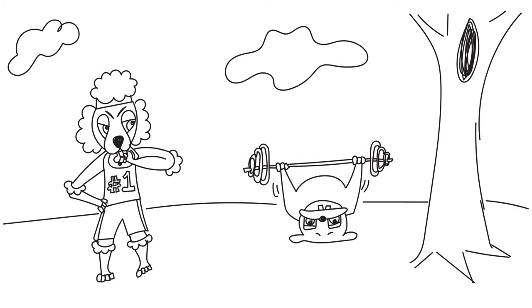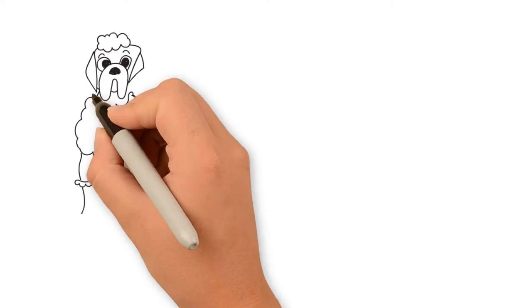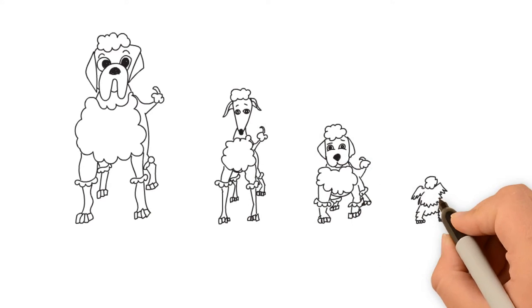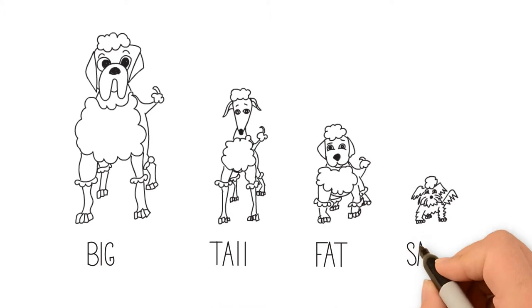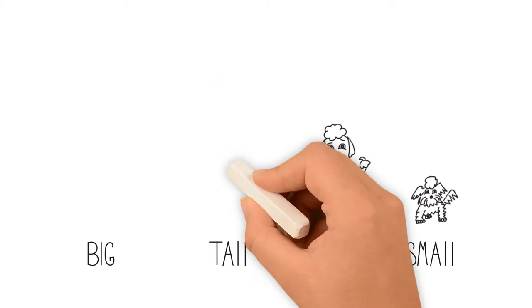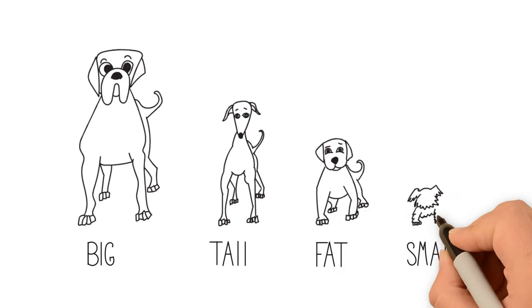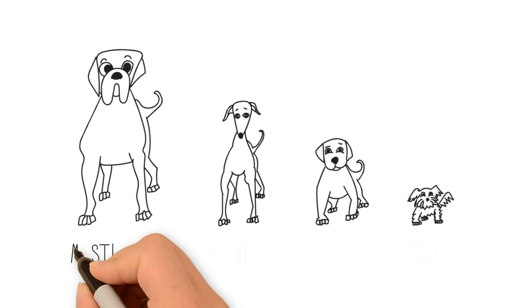But the problem is poodles think that every other kind of dog is just a really big, a really small, or a really fat poodle. When actually the other dogs aren't even poodles at all. They're terriers or mastiffs or greyhounds or labs.